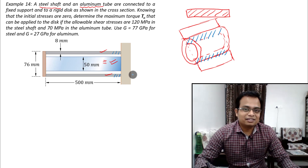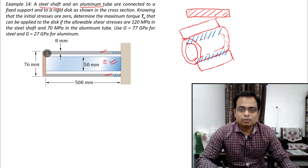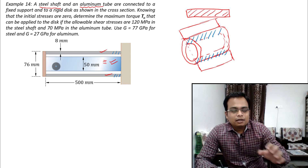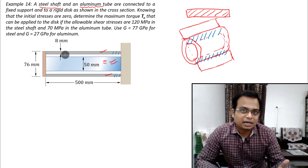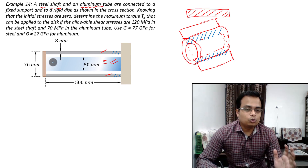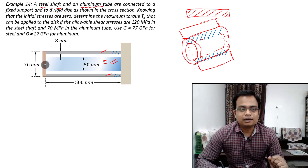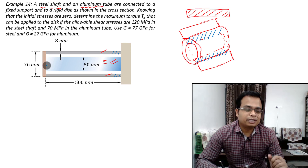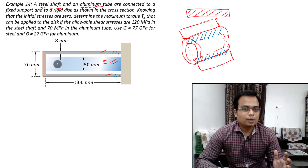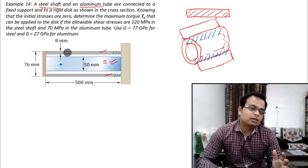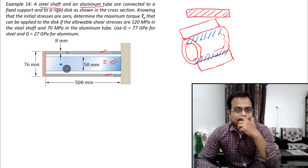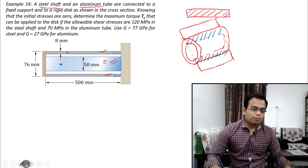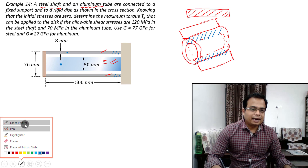Both the shaft and tube are connected to a disc — this disc is attached to the solid shaft and also to the aluminum tube. So if you twist that disc, both the shaft and the tube are going to be impacted. Whatever torque you apply at the disc is going to be shared — some amount by this solid shaft and some by the aluminum tube. This is a solid steel shaft.